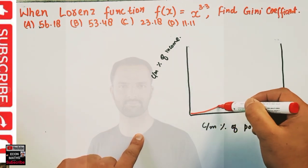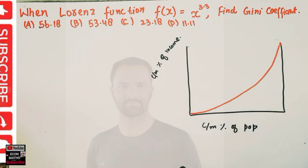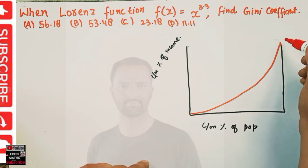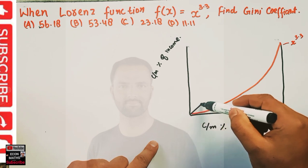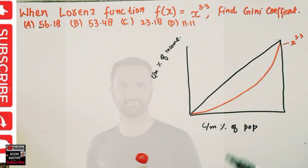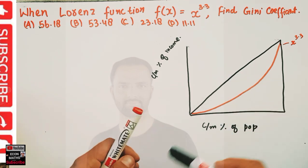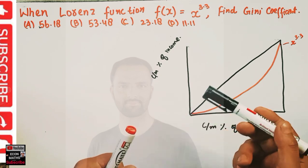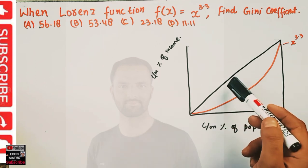Our Lorenz curve will look like this in this case — this is our Lorenz function, x to the power 3.3. Also in this case we have a line of perfect equality. This black line is called the line of perfect equality, and it says that everyone has the same income.